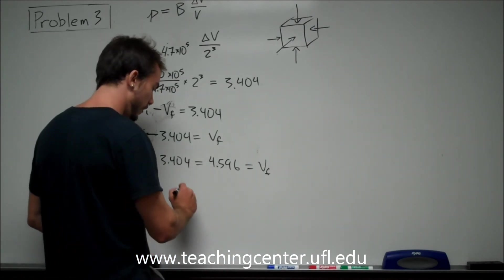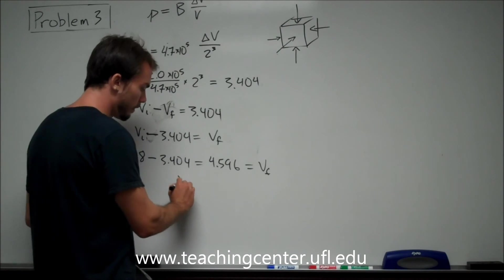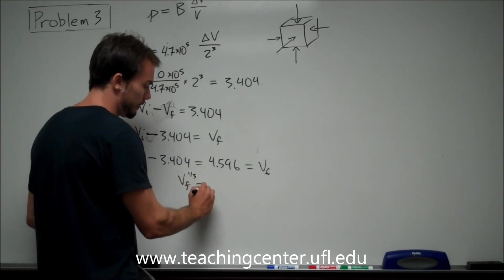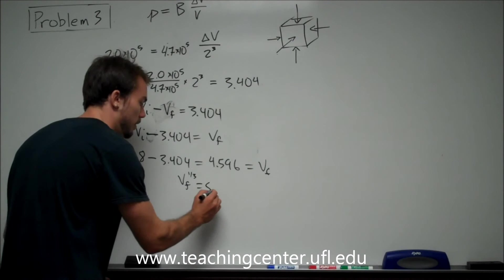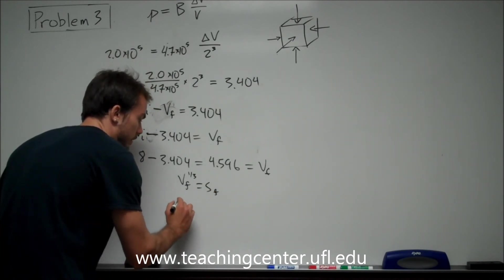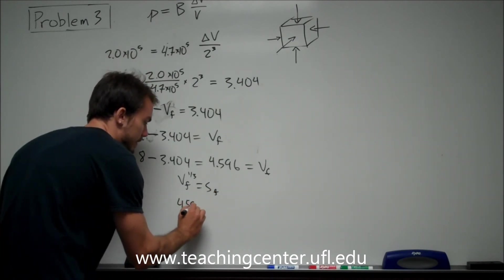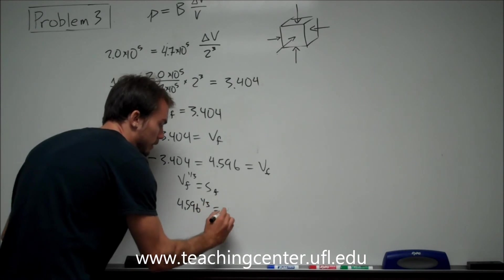So all you have to do at this point is say, well, if we know the final volume to the power one-third is equal to one side, our final side, then 4.596 to the power one-third should be our answer.